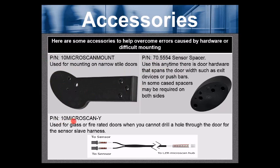Part number 10MICROSCAN-Y used for glass or fire rated doors when you cannot drill a hole through the door for the sensor slave or pass through harness. Here this harness is split and will allow you essentially would have two transfer loops one going to each sensor.